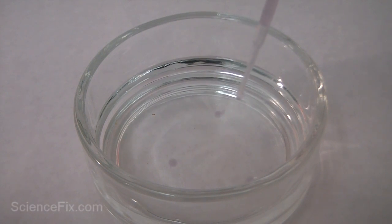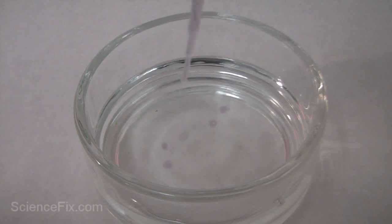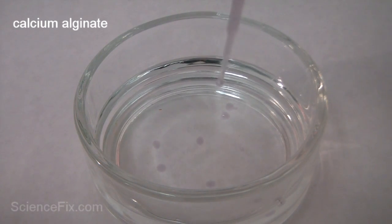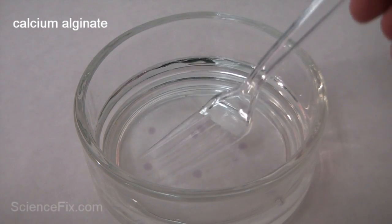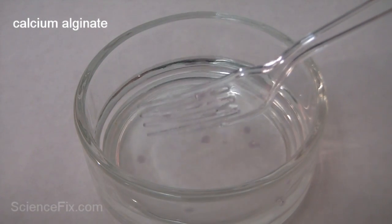Calcium ions from the calcium chloride replace the sodium ions in the sodium alginate to form calcium alginate. It's a solid gel that traps in the purple cabbage juice, so that's why you see spheres of the purple.